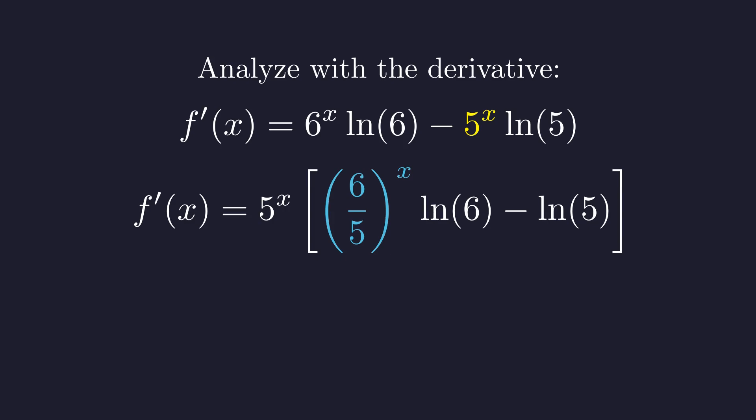Here's the key insight: the natural logarithm of 6 is already bigger than the natural logarithm of 5, and when we multiply the natural log of 6 by something greater than one, that first term becomes even larger relative to the second term.